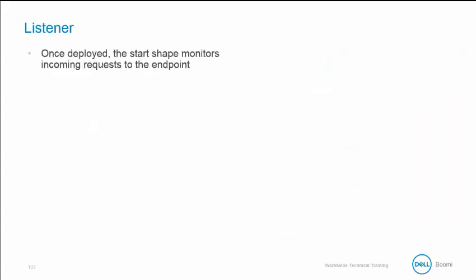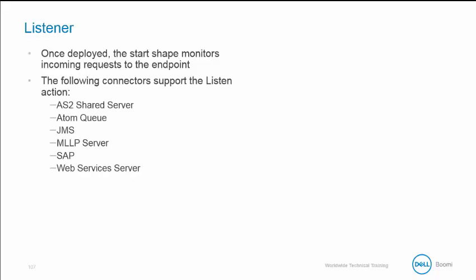Listener processes are used for event-based integrations. The start shape of the listener process has a connector with the listener action. Once a listener process is deployed, the start shape monitors incoming requests to the endpoint defined by the shape's connector operation and the atom's server settings. Each incoming request is routed to the rest of the process along with any posted document. The following connectors support the listen action: AS2 Shared Server, AtomQ, JMS, MLLP Server, SAP, and the Web Services Server. In the case of the Web Services Server, endpoints can optionally be defined if the API management feature is enabled.